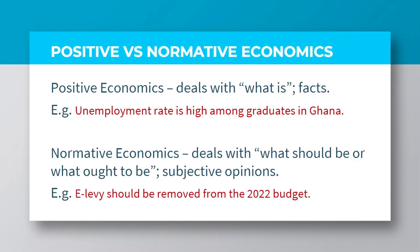In terms of the scope of economics, we need to also consider the distinction between positive economics and normative economics. Positive economics simply deals with what is — basically, we are talking about facts. For example, in the case of Ghana, a statement like 'unemployment rate is high among graduates in Ghana' means that whoever makes such a statement is dealing with the realms of positive economics. Normative economics deals with what should be or what ought to be — basically, it has to do with subjective opinions. For instance, a statement like 'e-levy should be removed from the 2022 budget' is an issue of normative economics.